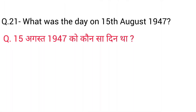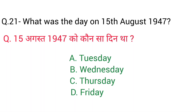Question No. 21: What was the day on 15th August 1947? 15 August 1947 को कौन सा दिन था? Right answer D — Friday.